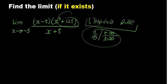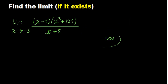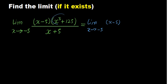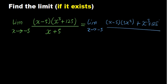How L'Hôpital's Rule works: you differentiate the numerator and denominator separately. If I differentiate the numerator, I use the product rule — maintain the first factor (x minus 5) and differentiate the second, getting 3x² plus x, then maintain the second and differentiate the first, so the derivative of x is 1 and the derivative of minus 5 is 0, giving 1 multiplied by x³ plus 125. Dividing by the derivative of the denominator: differentiating x plus 5 gives 1.